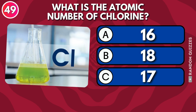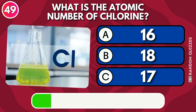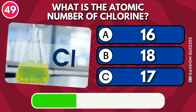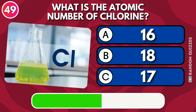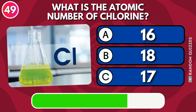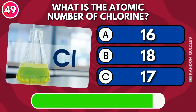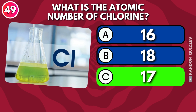What is the atomic number of chlorine: 16, 18, or 17? Answer: 17.